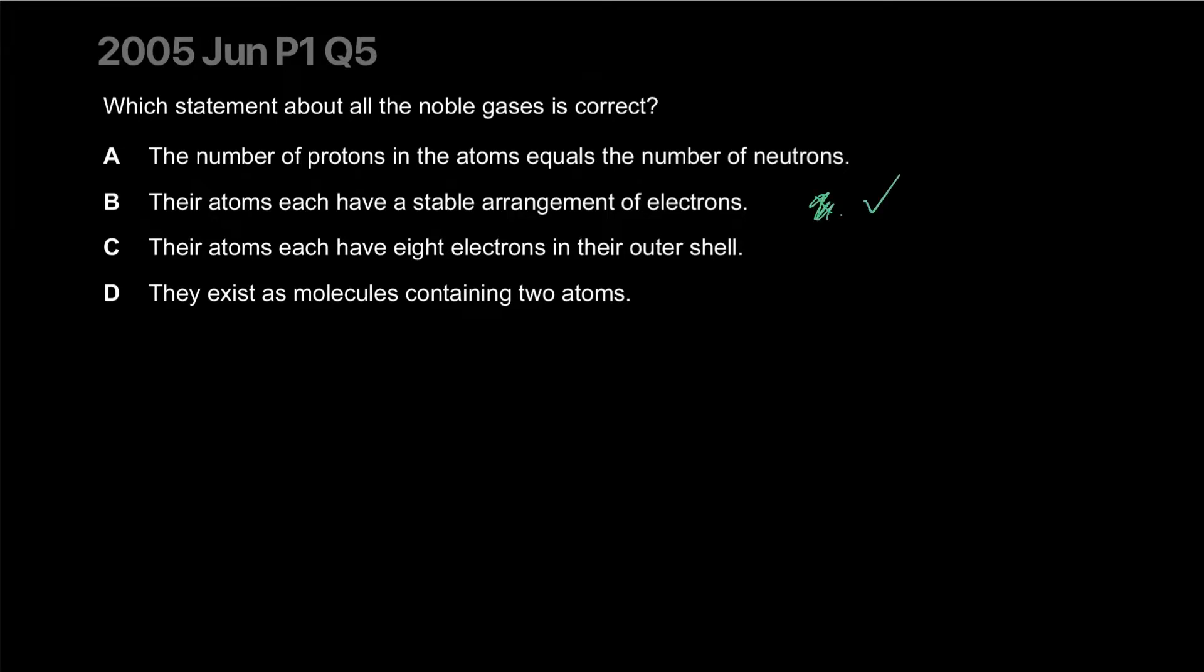Why am I putting across? The atoms each have eight electrons in their outer shell. That's true for everyone except helium which only has two electrons. They exist as molecules. If they don't react they won't produce molecules, right? So that's also wrong.